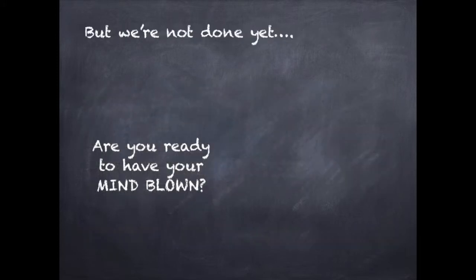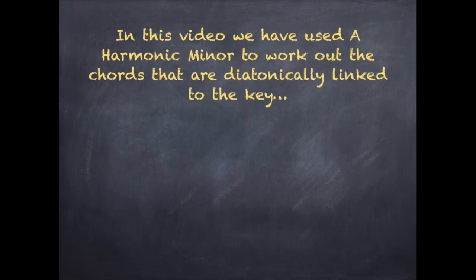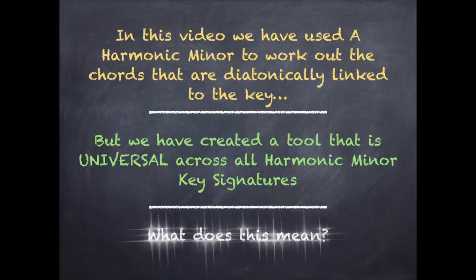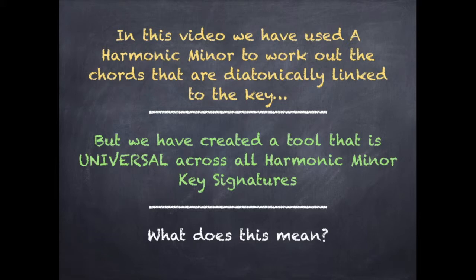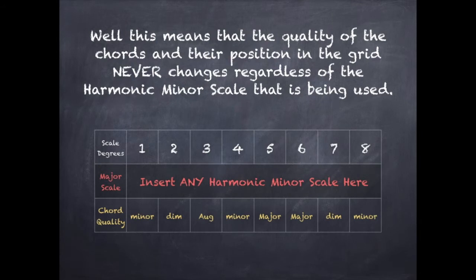But we're not done yet — are you ready to have your mind blown? In this video, we have used the A harmonic minor to work out the chords that are diatonically linked to the key, but we have created a tool that is universal across all harmonic minor key signatures. This means that the quality of the chords and their position in the grid never changes, regardless of the harmonic minor scale that is being used. The first chord is minor, the second chord is diminished, the third chord is augmented, and so on — these chord qualities in their positions never change. The only thing that will change is the harmonic minor scale that we insert into the grid.